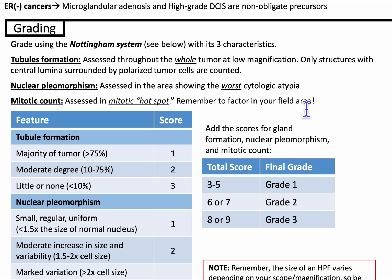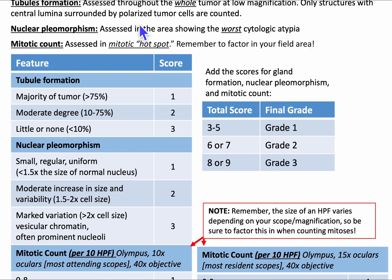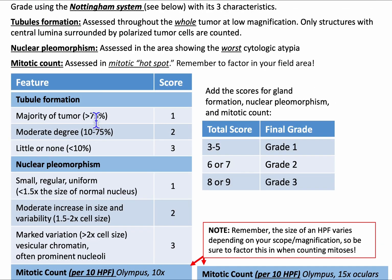The range of the Nottingham score goes from three to nine. Eight to nine is grade three with the worst prognosis, and three to five is grade one. For tubule formation: less than 10% of your tumor is a score of three; 10 to 75% is score two; and greater than 75% tubules is score one.